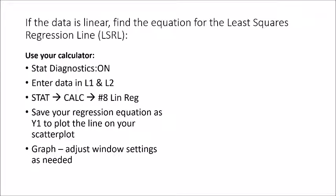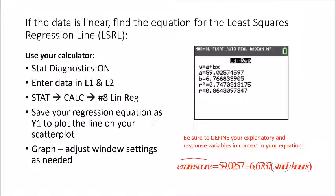So we're going to select stat calc and number eight in our linear regression. And we're going to get our equation. So you want to make sure and define your explanatory and response variables in context in your equation. So note that the little tent there over the y value means predicted y or in this case predicted exam score is equal to 59.0257, that's my y intercept, plus 6.6767, which is my slope, times in parentheses, the study hours. So you can use the letters x and y. But if you do, you still have to define your variables. And don't forget that you always need the little hat over your y variable.